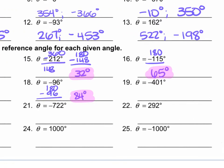For number 19, we're given negative 401. We're going to turn it into a positive and subtract 360 from it. 401 minus 360 gives us 41 degrees.